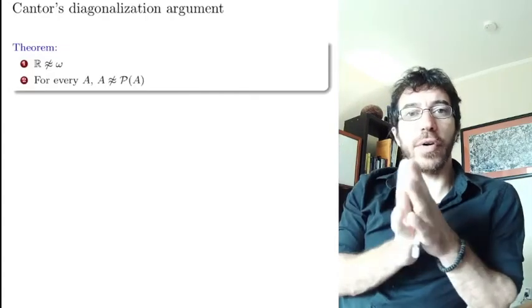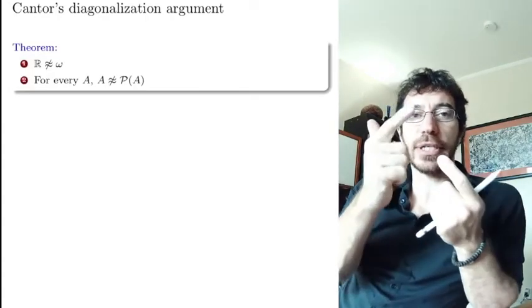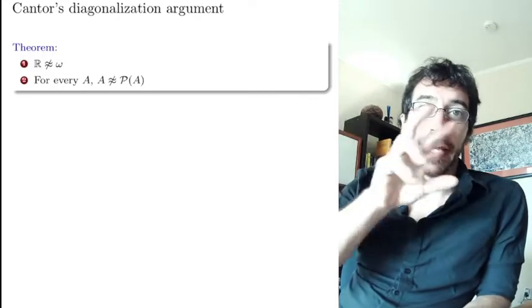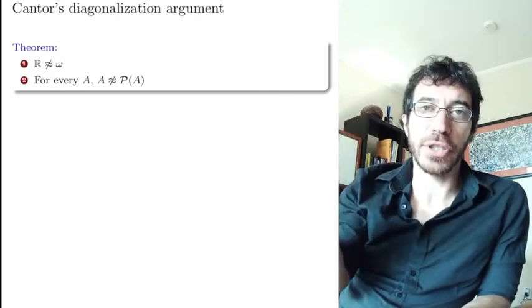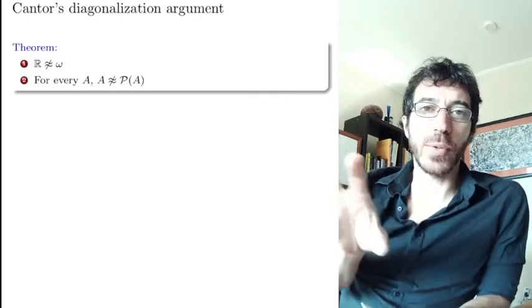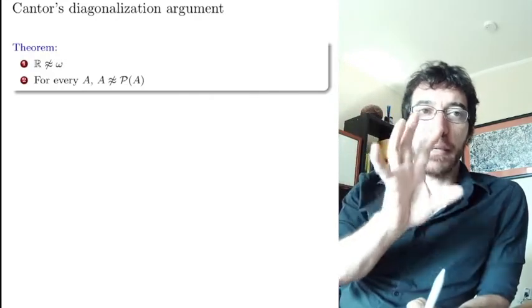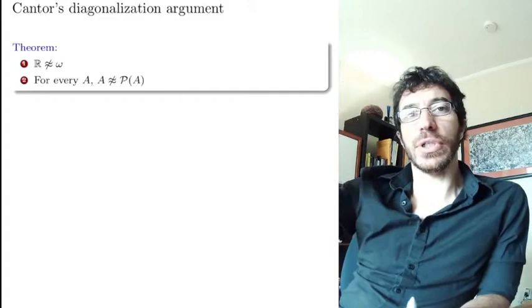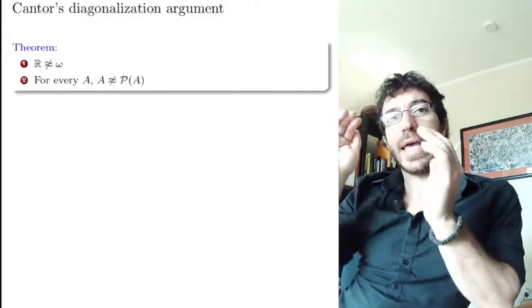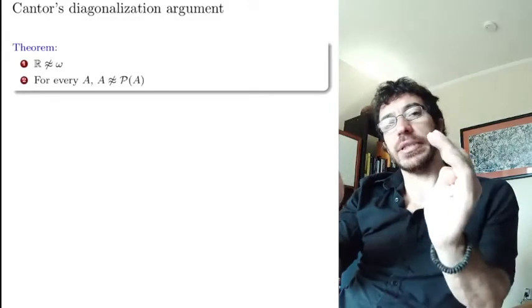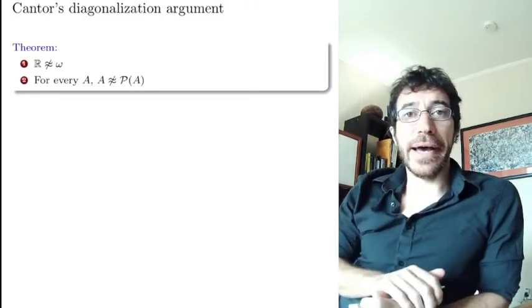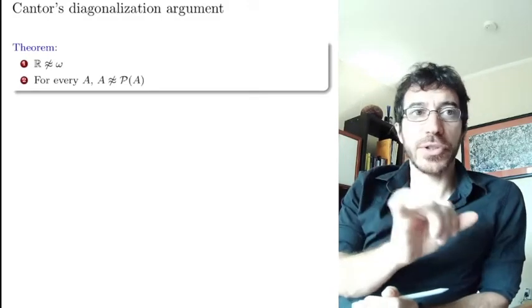So we have that the naturals, the integers, and the rationals are equinumerous — there are bijections between them, they all have the same size. On the other hand, the reals and the open interval (0,1) are equinumerous too.